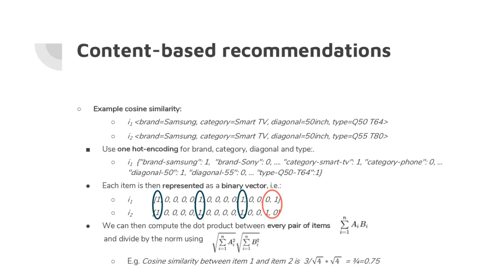Given these binary vectors, cosine similarity is essentially a dot product. In this case the dot product is 3, meaning three feature values where both items have a 1. We normalize by dividing by the product of each vector's unit length — square root of 4 times square root of 4. The result is 3 divided by 4, giving 0.75.